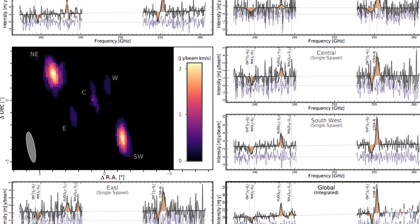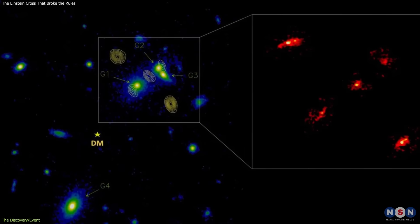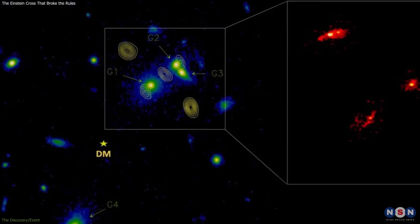Spectroscopy showed all five images came from the same galaxy, proving the fifth was real. The challenge? Four visible galaxies couldn't explain it. Only unseen mass could.